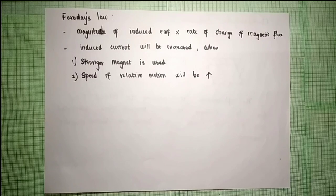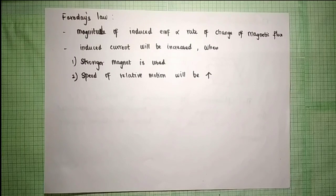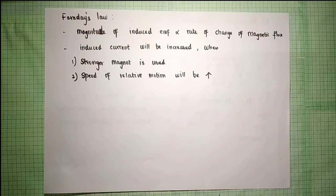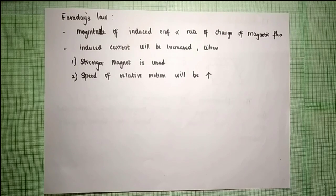Faraday proposed that the magnitude of induced EMF is directly proportional to the rate of change of magnetic flux. If the magnetic flux increases, the induced EMF increases. Induced EMF is proportional to the rate of change of magnetic flux.